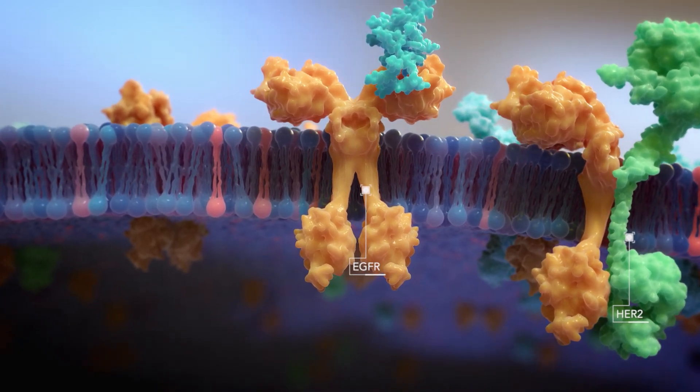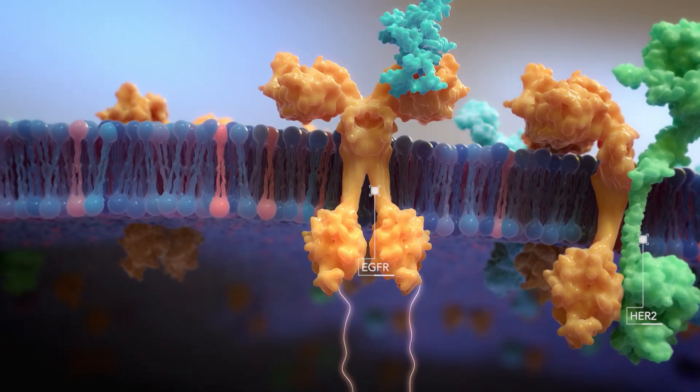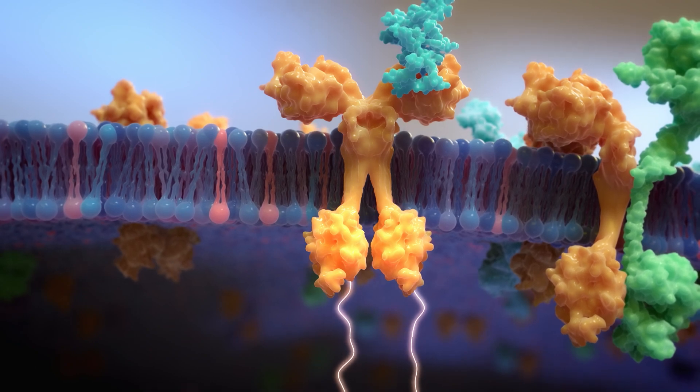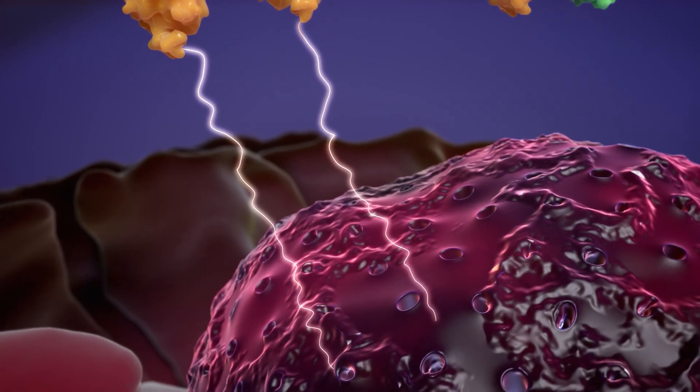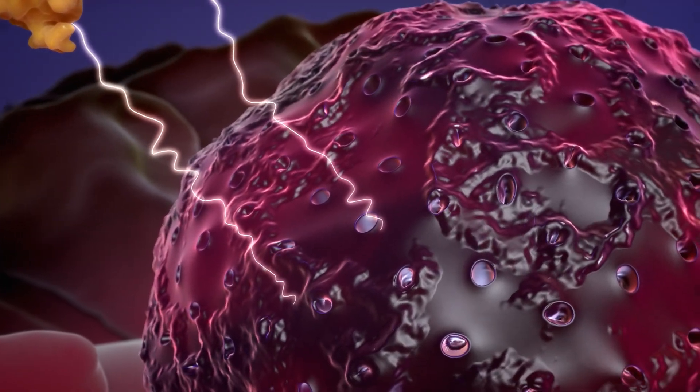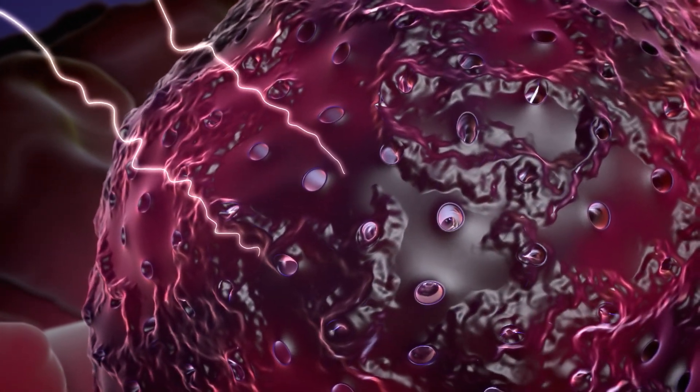Normally when growth factor ligands are expressed and bind to EGFR, it causes a conformational change that activates its kinase domain. The phosphorylation cascade that follows ligand binding is thought to promote survival and proliferation of cells in healthy tissues.